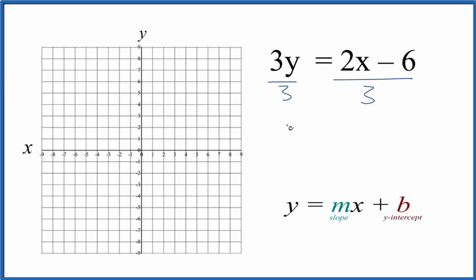3 divided by 3 is 1, so we have 1y, which is just y. And that equals 2x over 3 minus 6 over 3. 6 divided by 3 is 2, so just minus 2. Now we have this in slope intercept format.